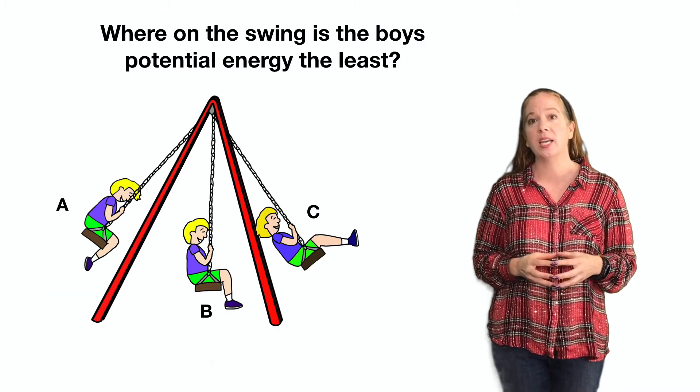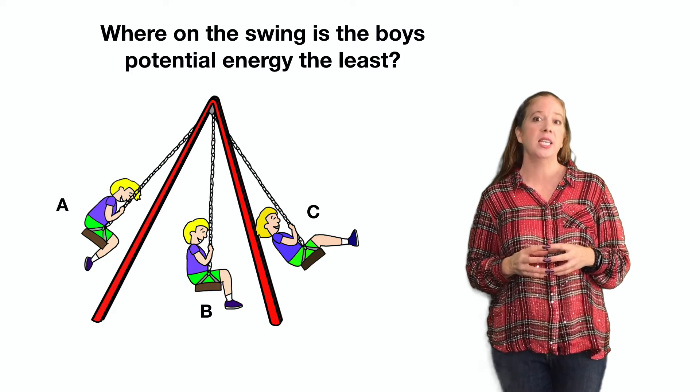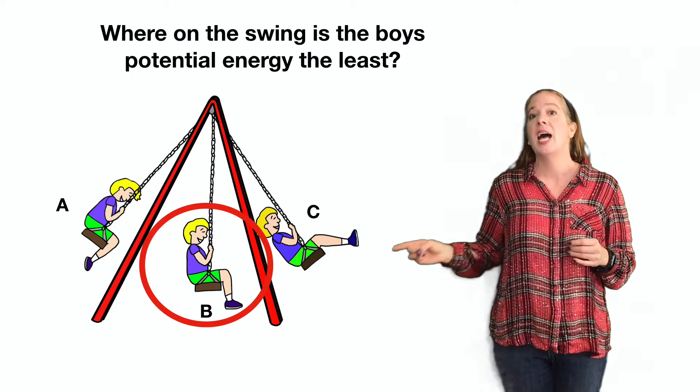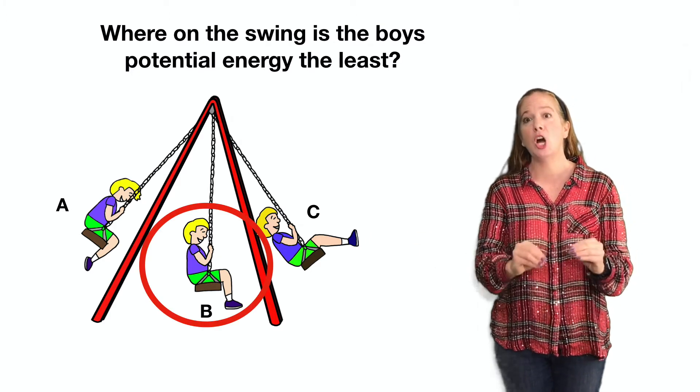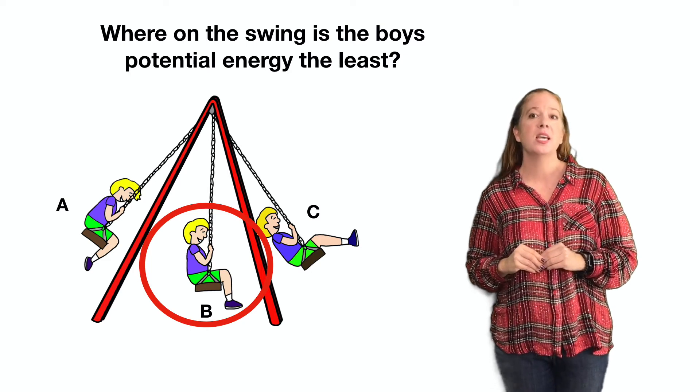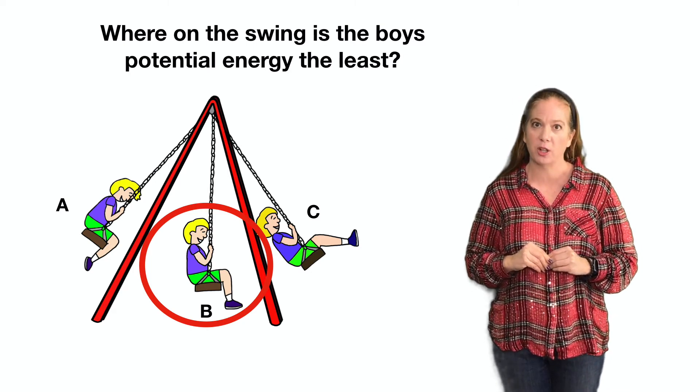Where on the swing is the boy's potential energy the least? Letter B represents the lowest height, so letter B is where the least potential energy is.